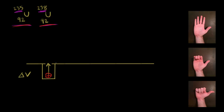The amount of work done to accelerate the ions is equal to Q — the charge on the ions — times the potential difference delta V. That's equal to the kinetic energy of the ions, which is one half mv squared, where m is the mass and v is the velocity. Let's solve for the velocity of the ions.